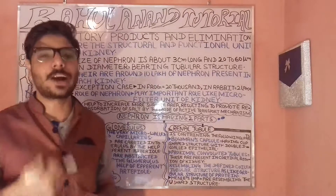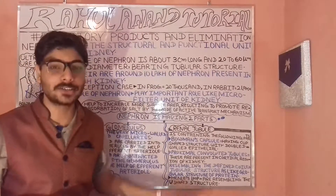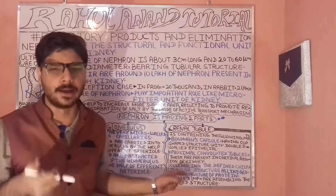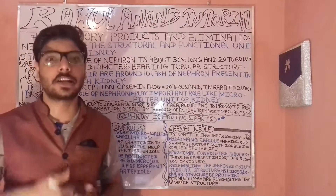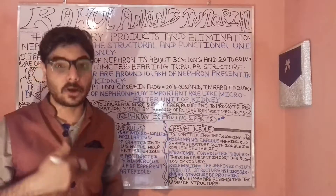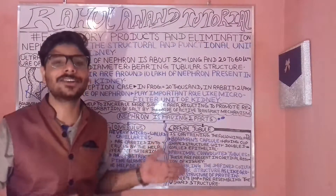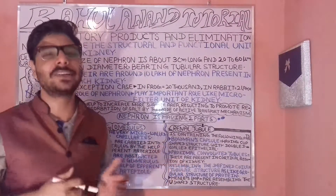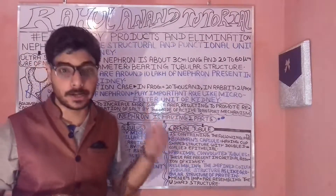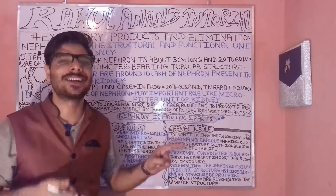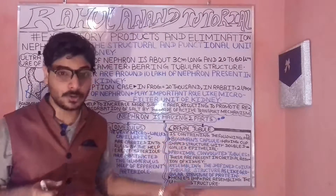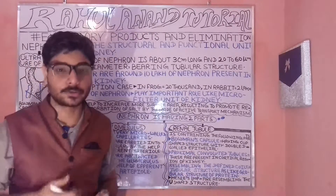The Bowman's capsule has a cup-shaped structure with a double-walled epithelium. The epithelium is a type of tissue. In histology — the branch of science dealing with tissues — tissues are groups of cells categorized broadly into muscular tissue, epithelial tissue, and dense connective tissue. We will cover that in the next lecture.